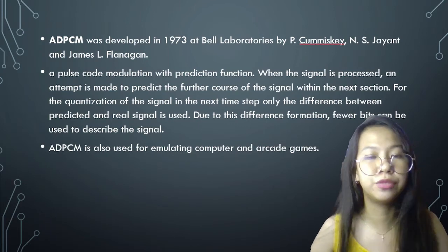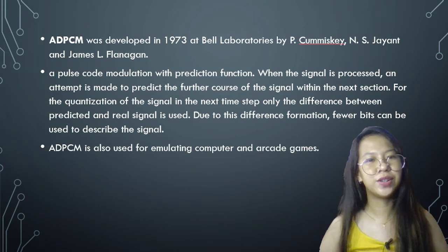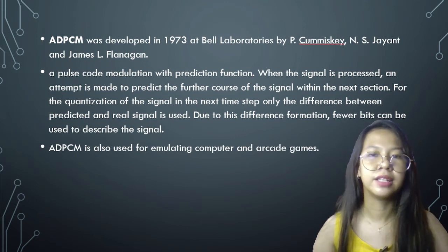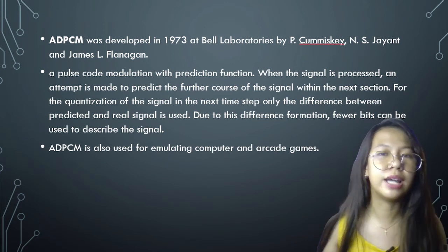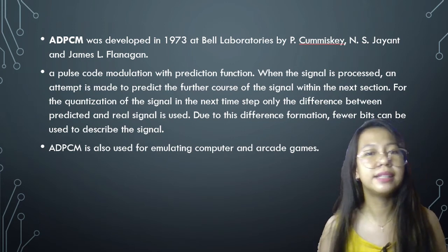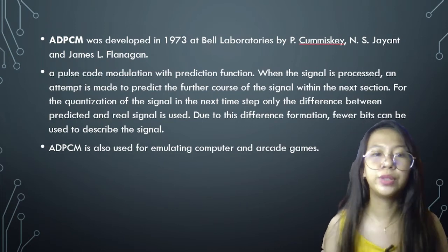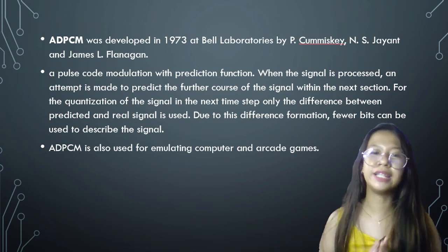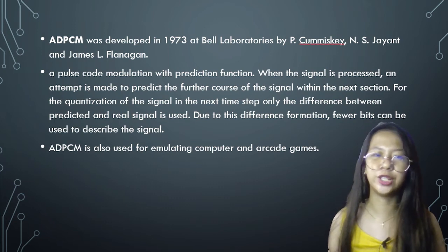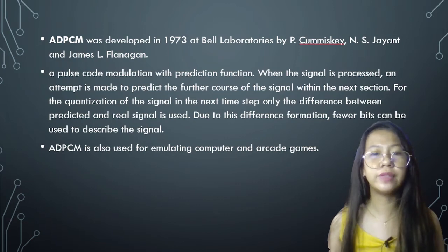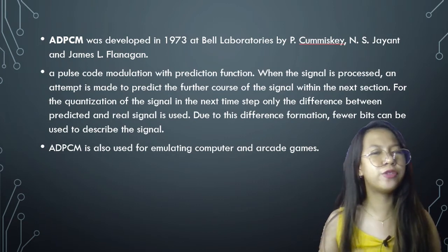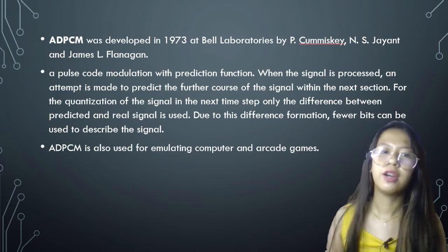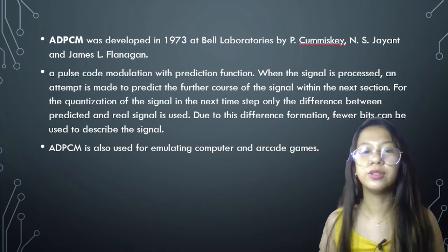ADPCM was developed in 1973 at Bell Laboratories by P. Cummiskey, N.S. Jayant, and James L. Flanagan. Another definition of ADPCM is that it is a pulse code modulation with a prediction function. When a signal is processed, an attempt is made to predict the further course of the signal within the next section. For the quantization of the signal in the next time step, only the difference between the predicted and real signal is used. Due to the difference formation, fewer bits can be used to describe the signal.